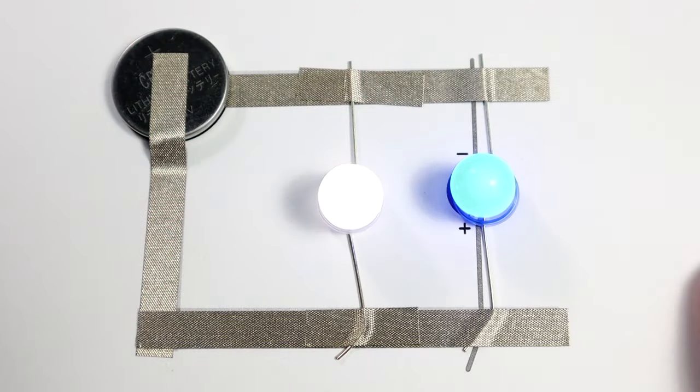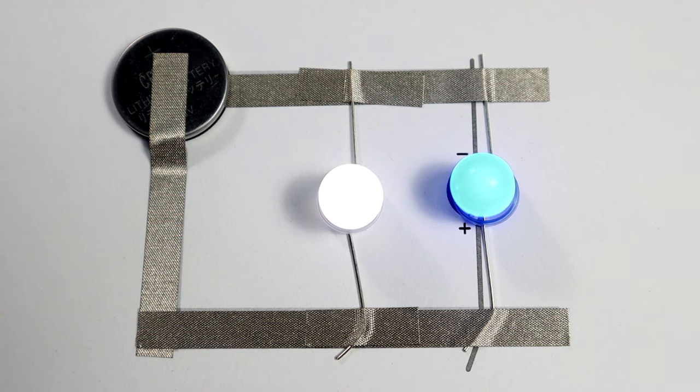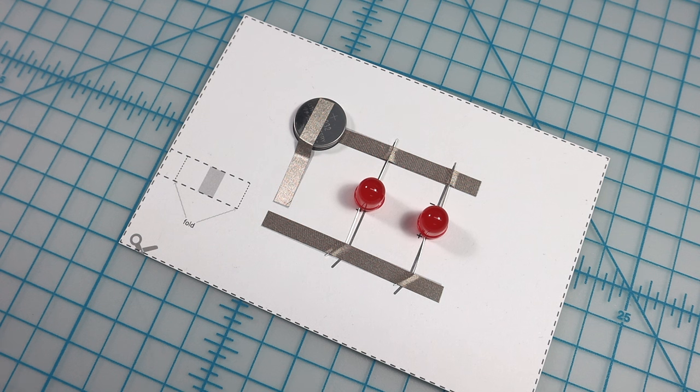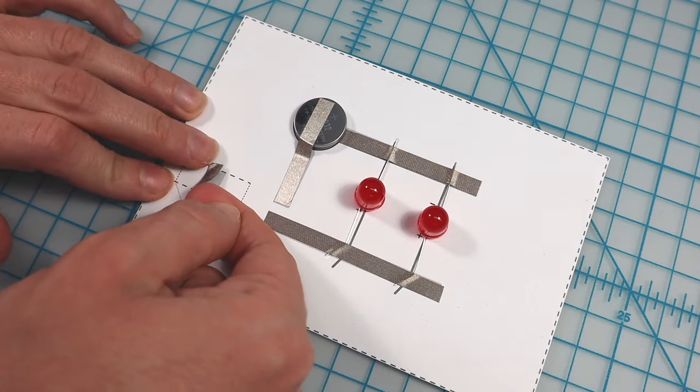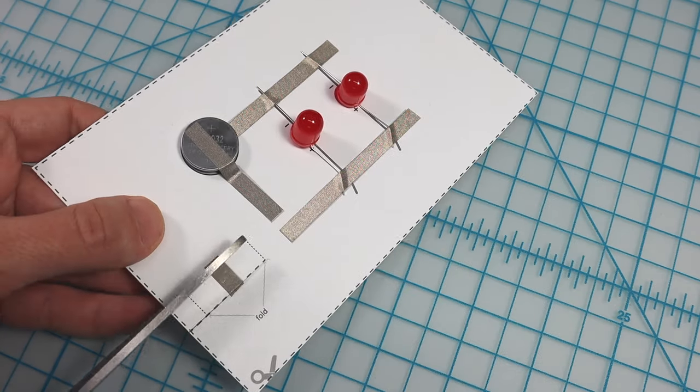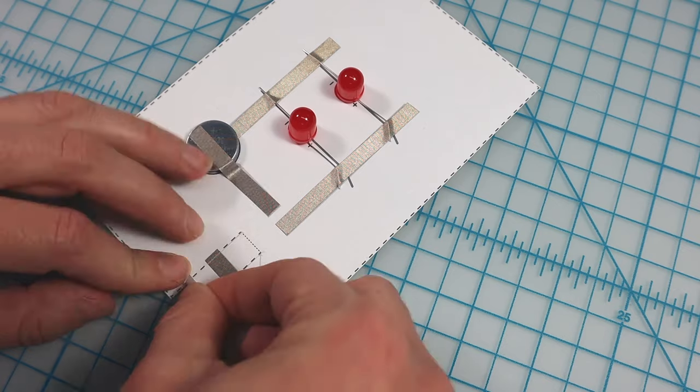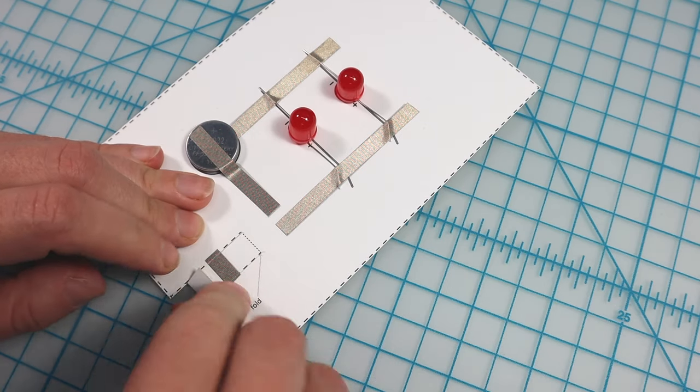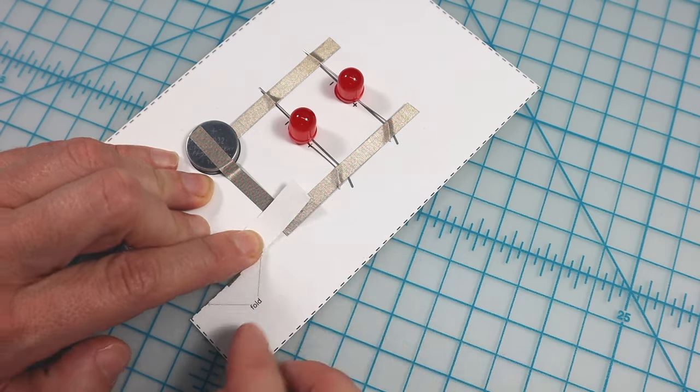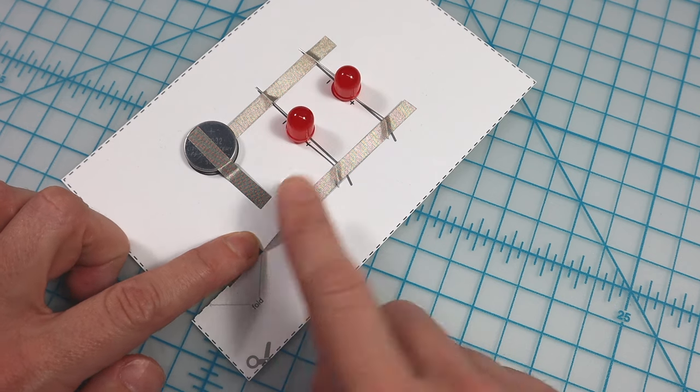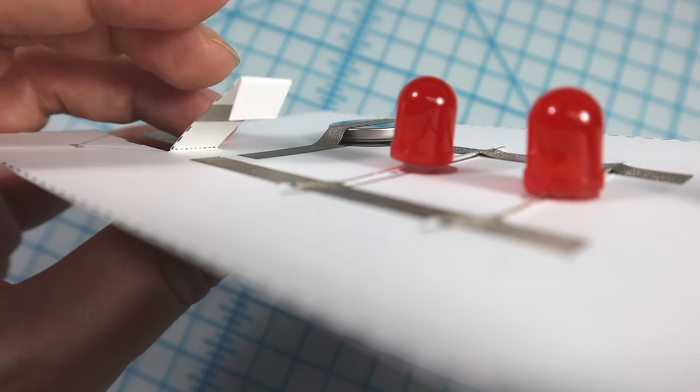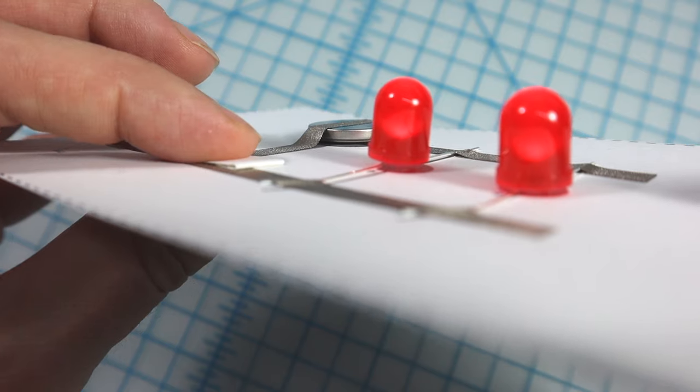But what if you want to control when the LEDs turn on and off? Let's make a paper switch. The third template is similar to the circuit we just made, but there's a break in the Maker tape preventing the flow of electricity. Add Maker tape to the flap on the side and fold it where shown. This flap will act as a push button switch. When you push the paper down, the Maker tape inside will close the gap in the tape allowing the electricity to flow and make the LEDs turn on.